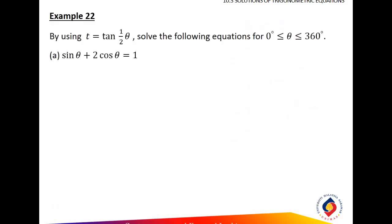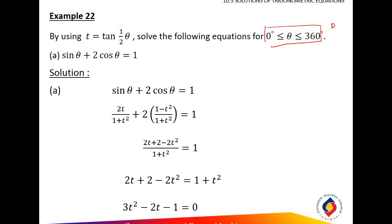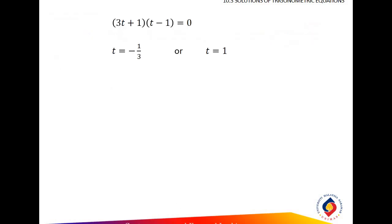So we go on to an example. We want to solve 6 sin theta plus 2 cos theta, and for this equation it's in terms of T. So first, we change the sin theta and cos theta to expressions in terms of T. As you can see, you can combine these two fractions into one and cross-multiply the denominator. So you will get a quadratic equation in terms of T.